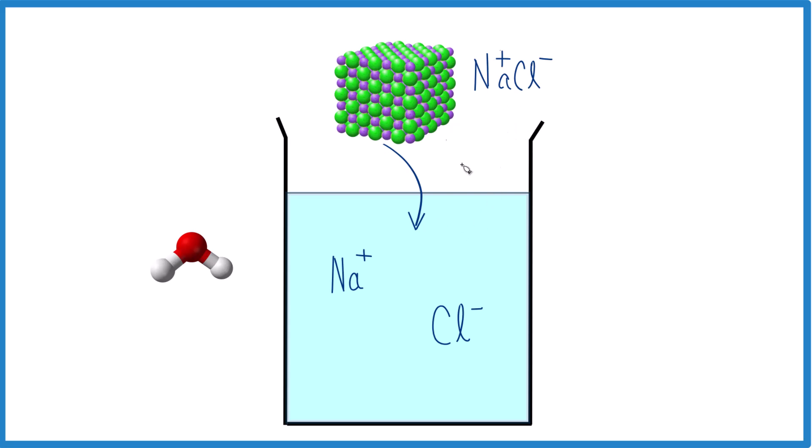When we put sodium chloride in water, it's very soluble, and it dissociates into Na+, the sodium ions, and the chloride ions. So there's two things going on here that we need to look at to determine whether this is going to be endothermic, the water gets colder, or exothermic, the water gets warmer.